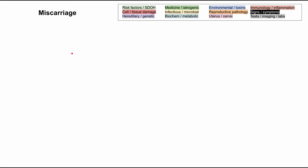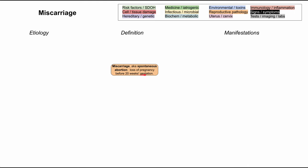A miscarriage, also known as a spontaneous abortion or early pregnancy loss, is defined as a loss of pregnancy before 20 weeks gestation. In contrast, a loss of pregnancy after 20 weeks gestation is called a stillbirth. What we're talking about here is loss of pregnancy before 20 weeks gestation, also called early pregnancy loss, miscarriage, or spontaneous abortion.